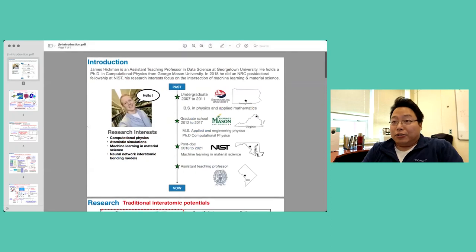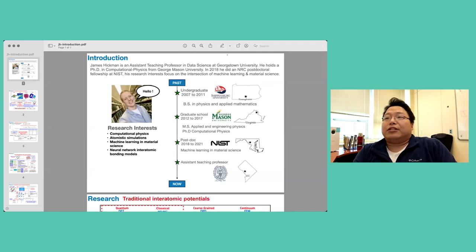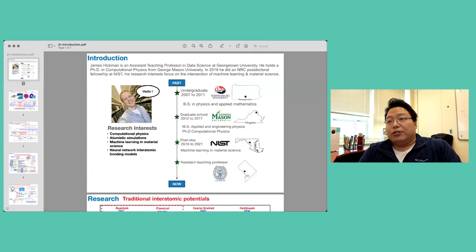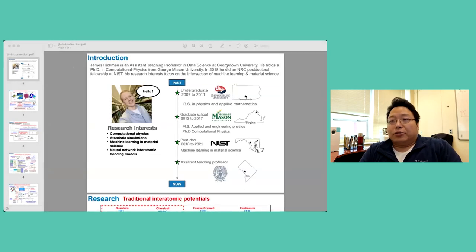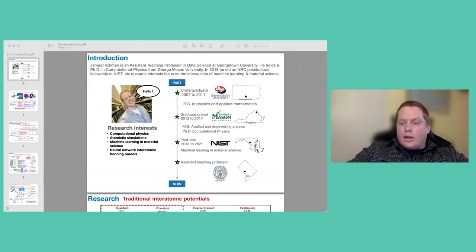Our next panelist is Dr. James Hickman from Georgetown University. He is an assistant teaching professor in the same program, data science and analytics program at Georgetown University. And he's also serving as an active guest researcher at NIST. His research focuses on applying classical atomic simulations in various material science and condensed matter physics problems. And he is also doing a lot of research on the intersection between machine learning and material science. James, I will leave the rest of your introduction to yourself.